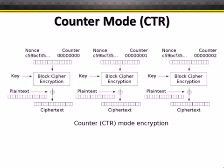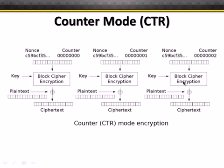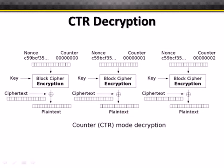Counter (CTR) mode is another attempt to reduce patterns in ciphertext. Rather than using a chained initialization vector, we start with a nonce — a number used once — and add a counter to it. We encrypt the nonce using the key, then XOR that with the plaintext to get ciphertext. The blocks are not chained together; the counter just increments. This is very fast, but it has weaknesses — an incremental pattern may develop, and frequency analysis could still work against it.